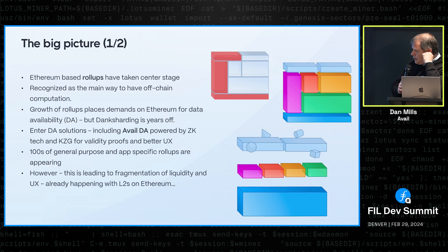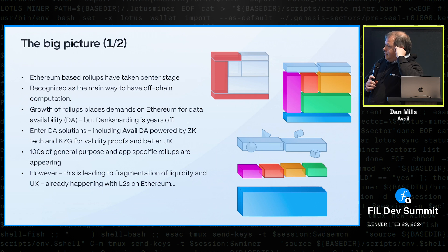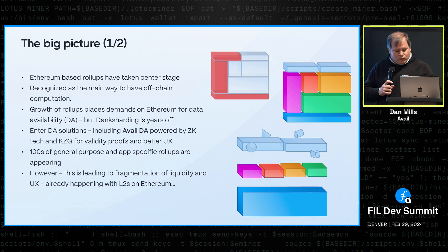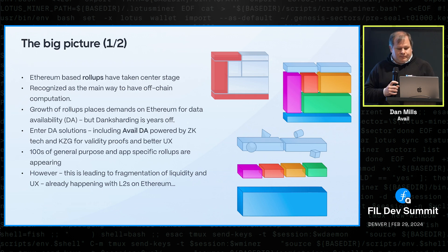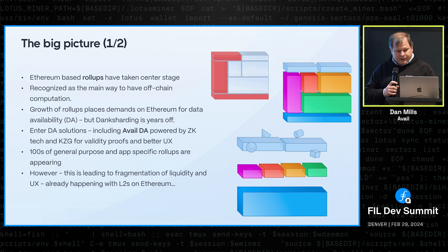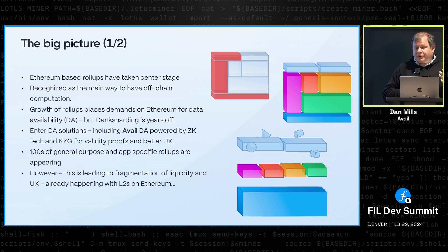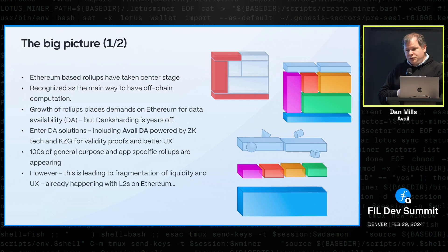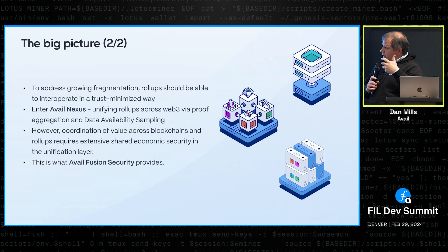That was our first product. The rest of our roadmap addresses the fragmentation of liquidity, user experience, and developer experience inherently caused by this rollup-centric universe. Just this week, we are announcing Avail Nexus, which is a proof aggregation layer built on top of the DA layer, as well as Avail Fusion security, which provides additional economic security at the DA base layer.